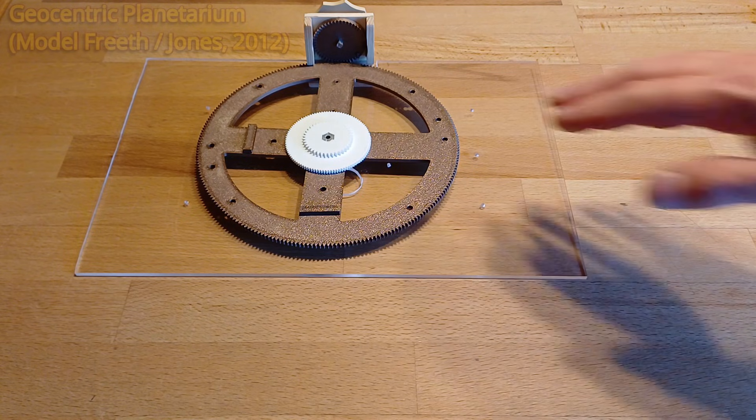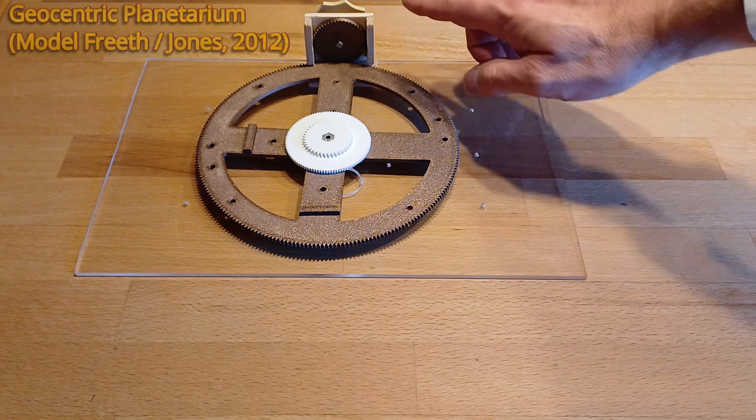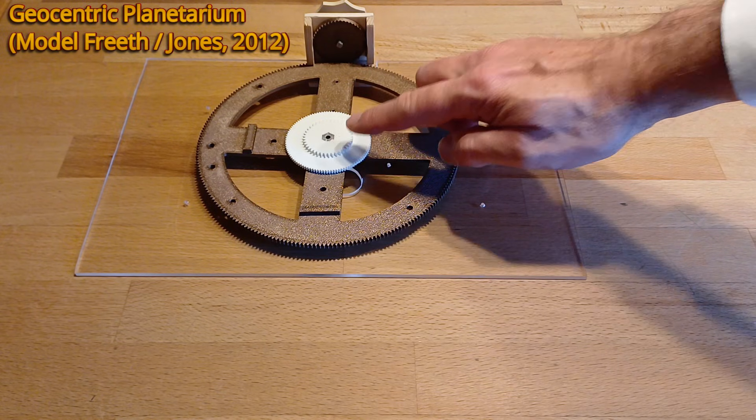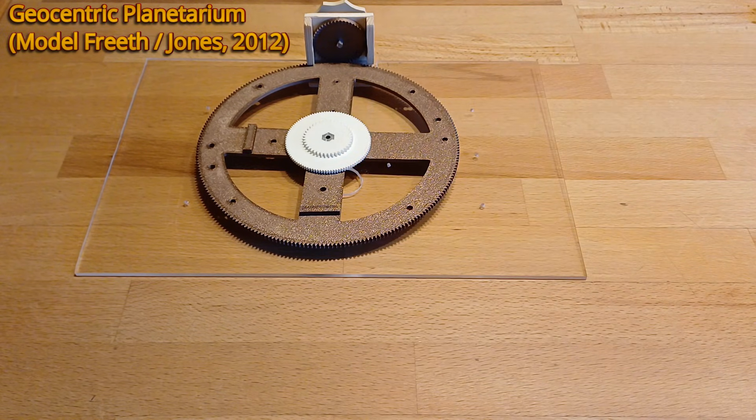Finally, I'd like to show what I have so far for the geocentric planetarium. The main wheel B1 with the two fixed wheels Mercury 1 and Sun Venus 1.